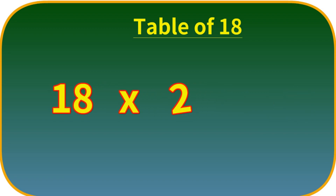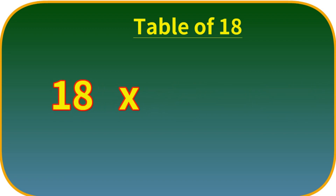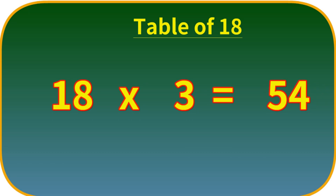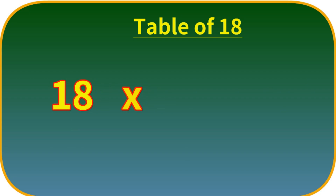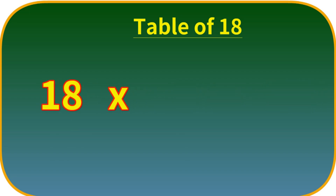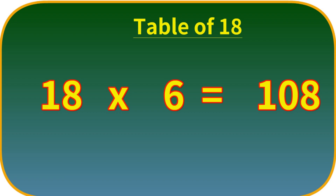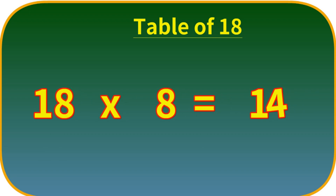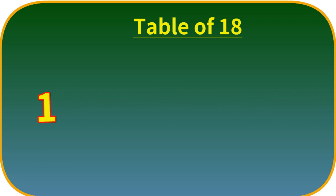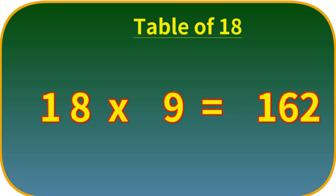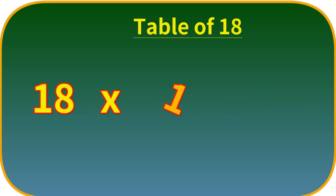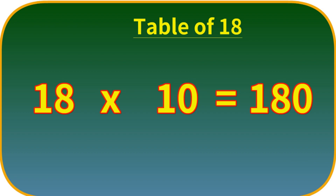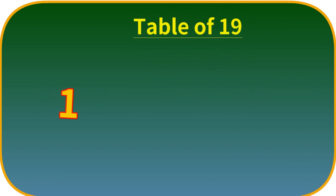Table of 18. 18 ones are 18. 18 twos are 36. 18 threes are 54. 18 fours are 72. 18 fives are 90. 18 sixes are 108. 18 sevens are 126. 18 eights are 144. 18 nines are 162. 18 tens are 180.